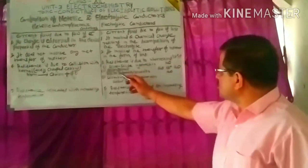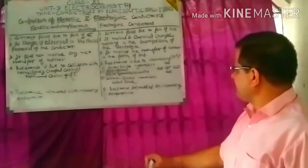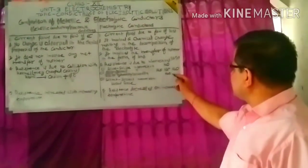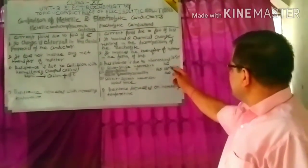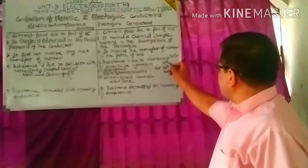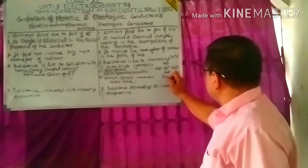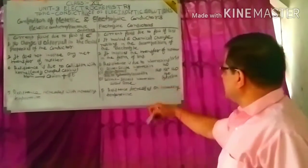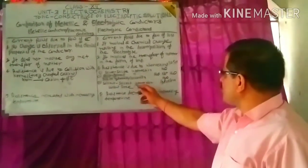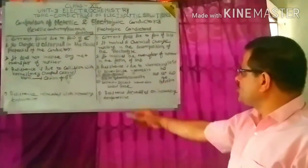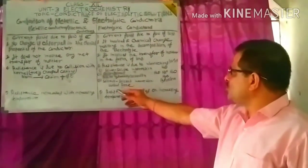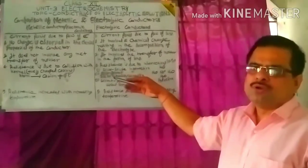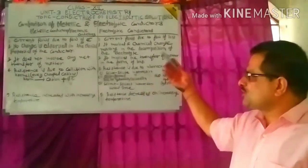The second type is solute-solvent interaction, due to hydration or solvation — for example, a sodium ion surrounded by H₂O molecules, which is hydration. The third type is solvent-solvent interaction, such as viscous forces, where different layers of the solvent flow at different speeds.